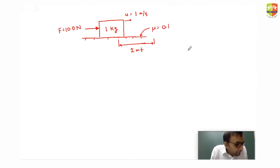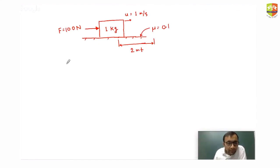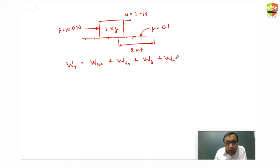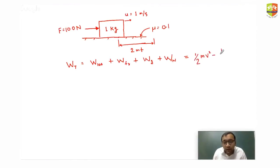The answer is root of 397. To solve this, find the total work done on the 1 kg block: work done by the 100 N force, by friction, by gravity, and by normal force. Adding all these equals the change in kinetic energy: (1/2)mv² minus (1/2)mu². Work done by the 100 N force is 100 × 2 = 200 J.